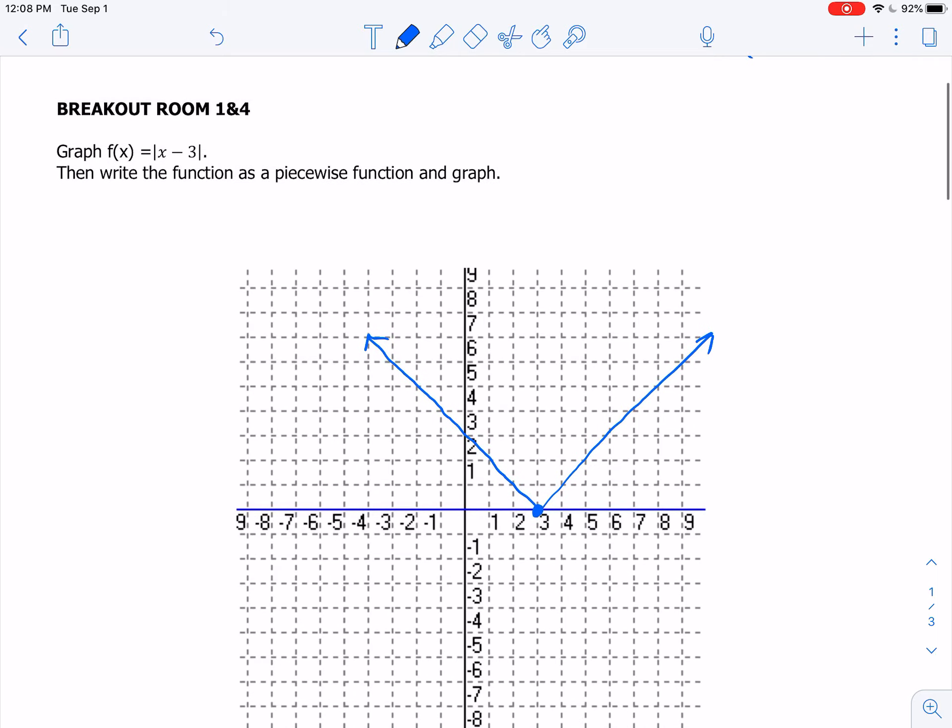So when we want to write this as a piecewise function, we've got two pieces. So we can say f of x is equal to, and we use the curly brackets to indicate that there's two pieces. And so one piece has a y-intercept of 3 and a slope of negative 1, so this just becomes negative x plus 3. And this is true from negative infinity to positive 3. So I can say where x is less than positive 3. I could also say less than or equal to.